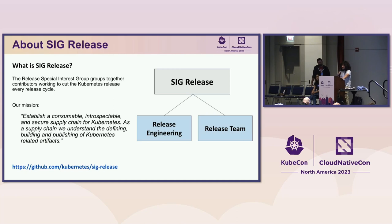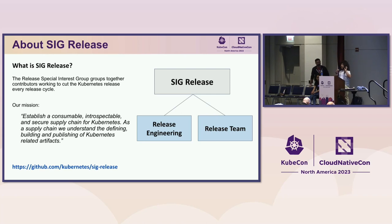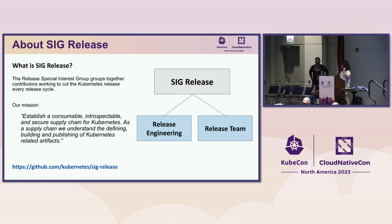We have a clear and defined mission, which is to establish a consumable, introspectable, and secure supply chain for Kubernetes. The way you can think about this is that we are the SIG that groups together all of the contributors working on the release tooling and processes. SIG Release has two main subprojects: release engineering, which I'm one of the technical leads for, and the release team, which my colleagues are going to talk about.